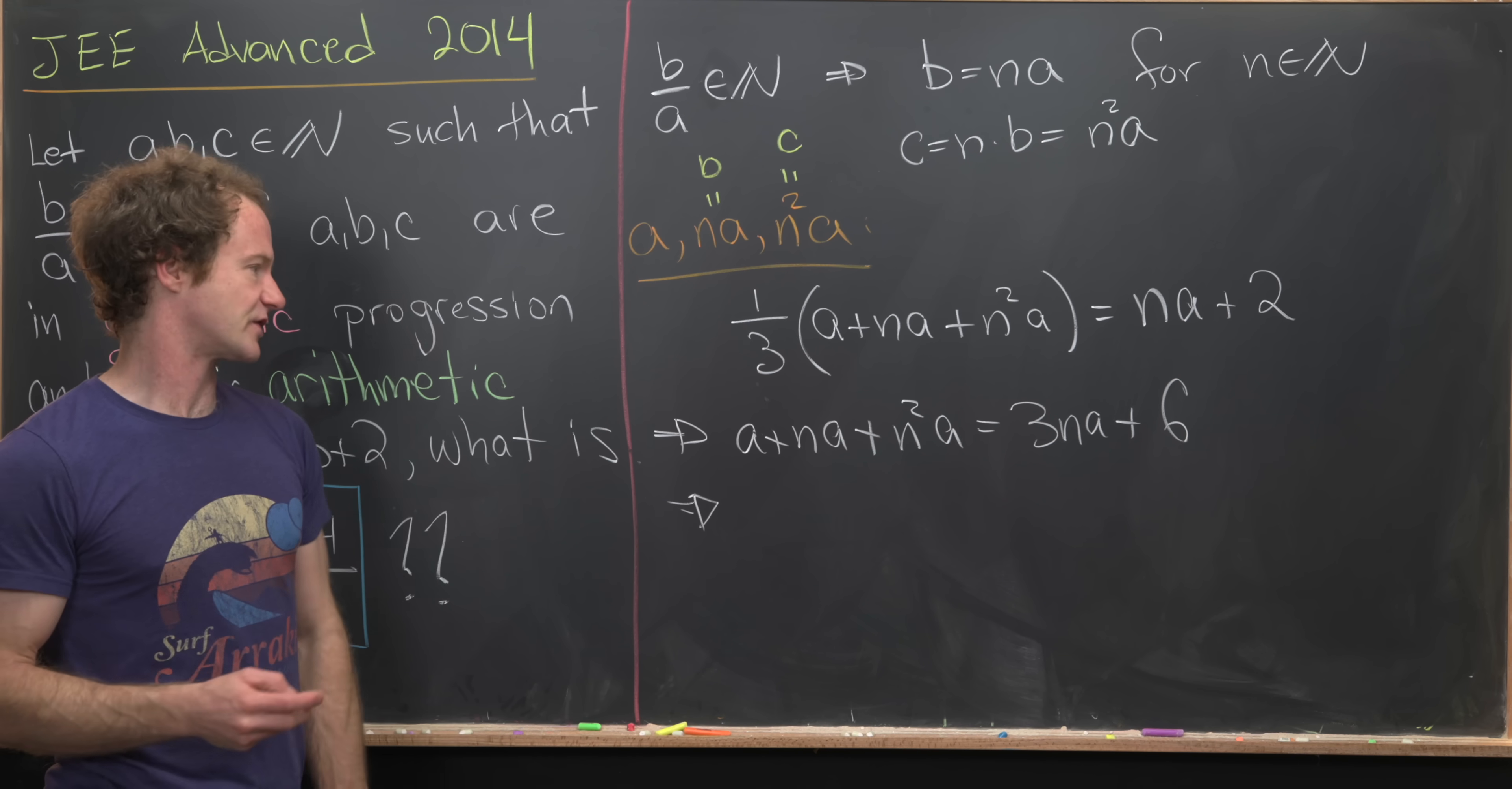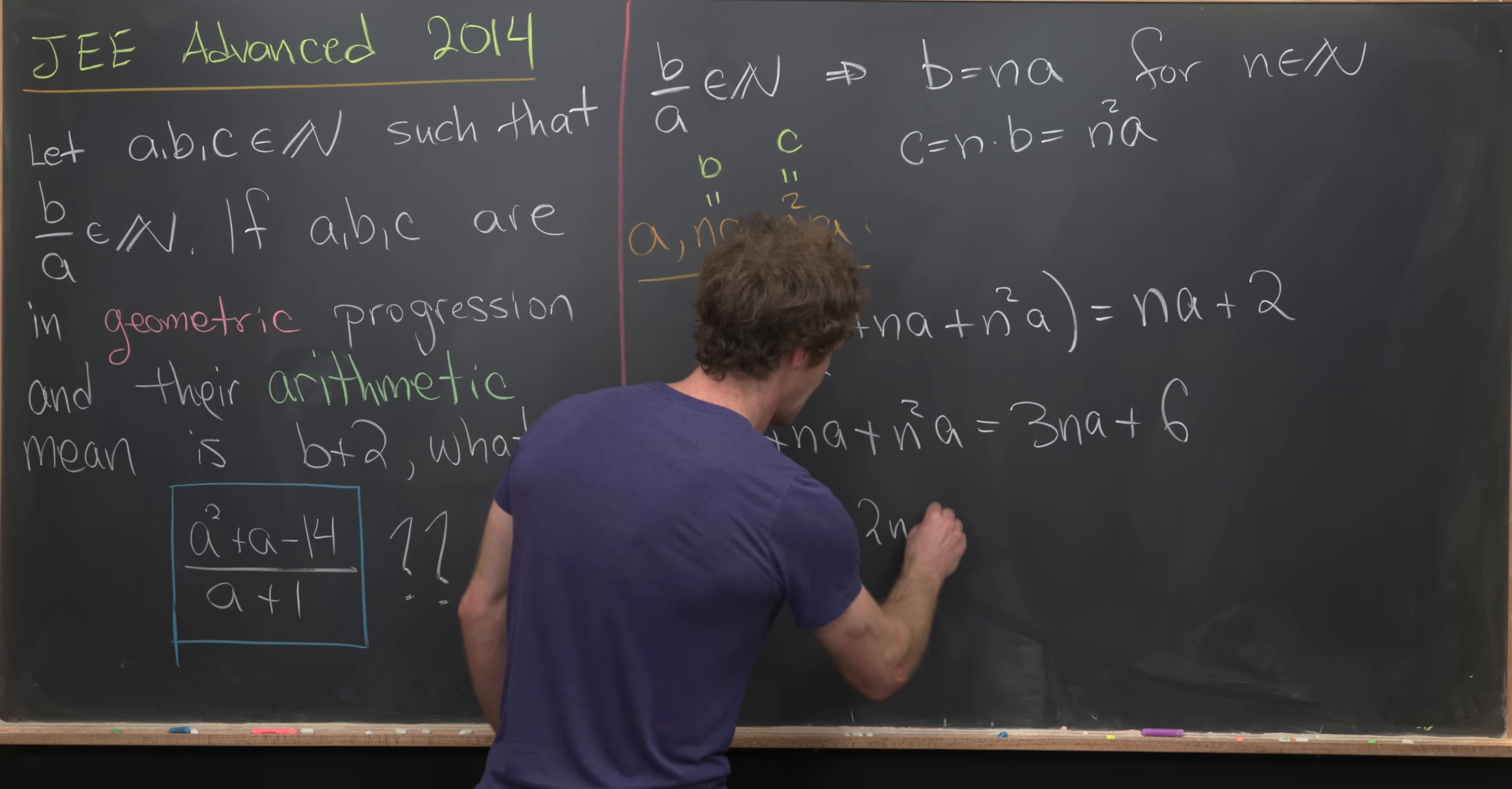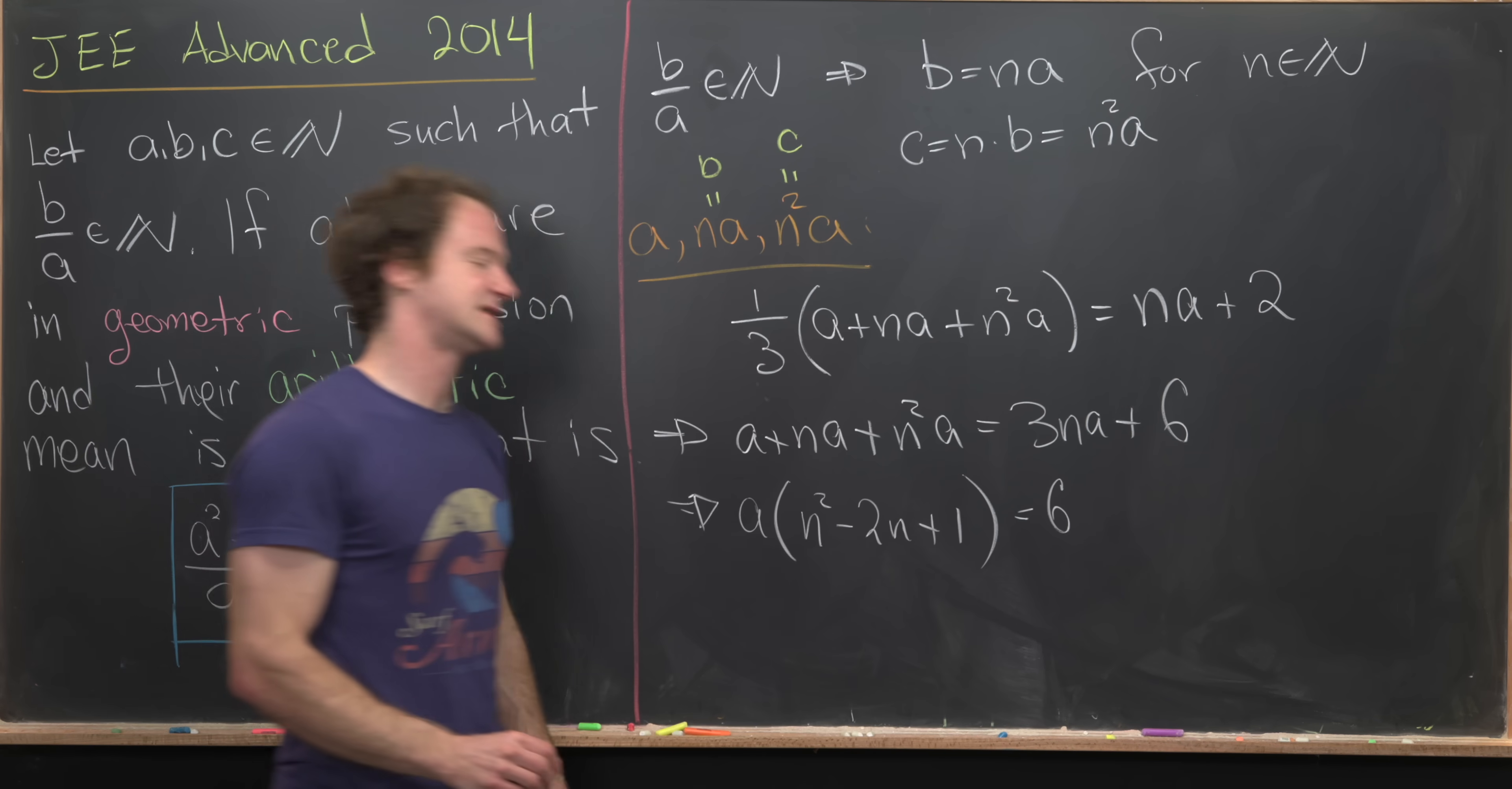Notice that A will be a greatest common factor here. So we can have that this is A times N squared minus 2N plus 1. So I've got minus 2N for moving this 3NA over. And then what's left over here on the right-hand side is 6.